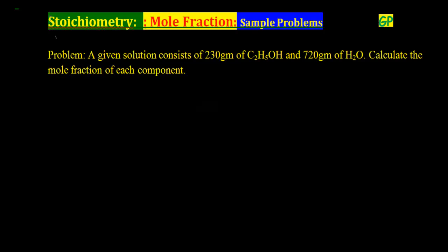This problem is related to finding mole fraction. The question says: a given solution consists of 230g of ethyl alcohol (C2H5OH) and 720g of water. Calculate the mole fraction of each component.